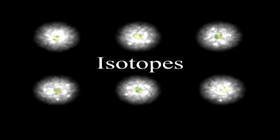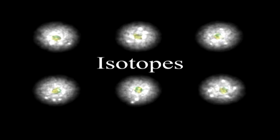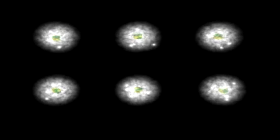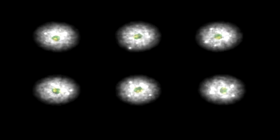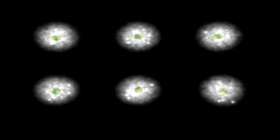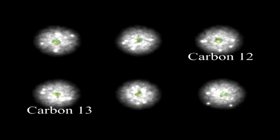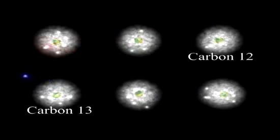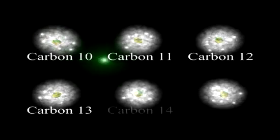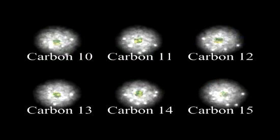Isotopes of a given element like carbon are virtually identical to one another in terms of chemical reactivity but sometimes vary in their physical properties. For example, the nuclei of some isotopes called radioactive isotopes spontaneously disintegrate, releasing radiation in the process. In the case of carbon, the isotopes carbon-12 and 13 are stable, while carbon isotopes 10, 11, 14, and 15 are radioactive.